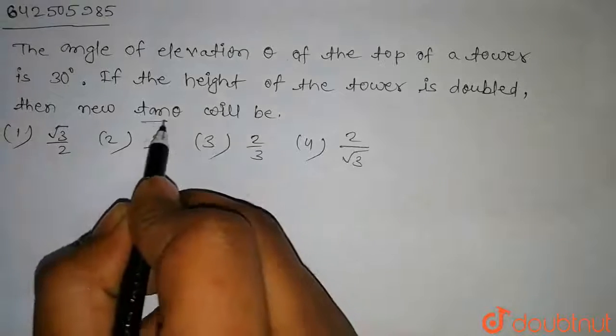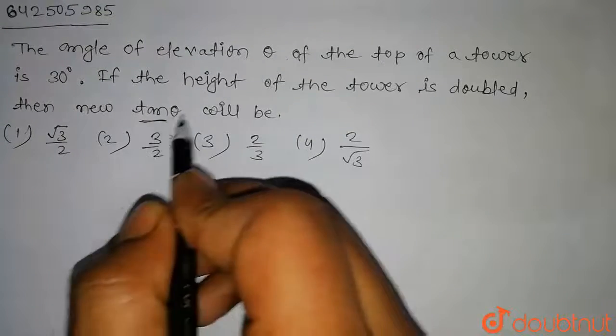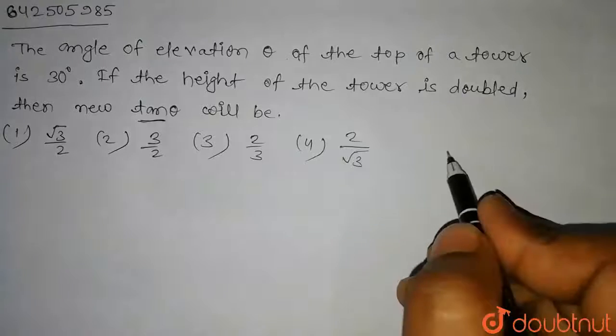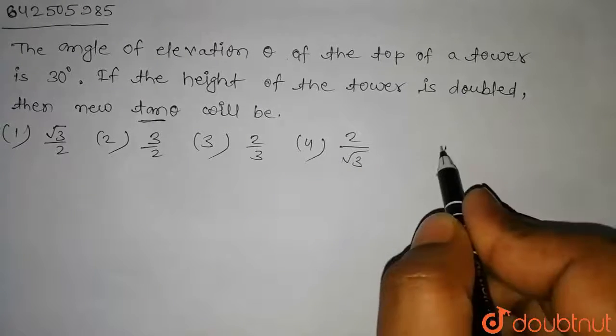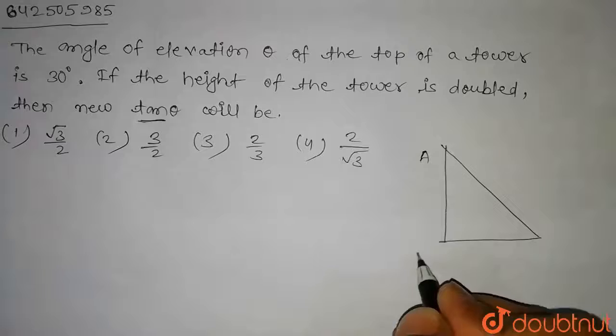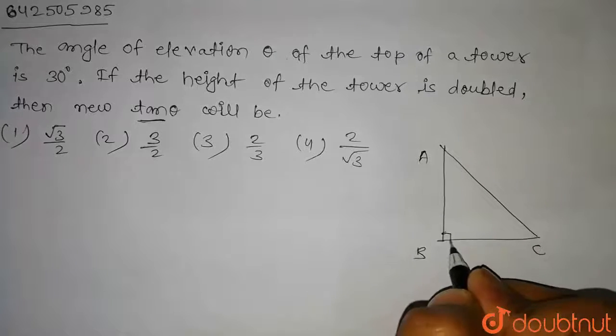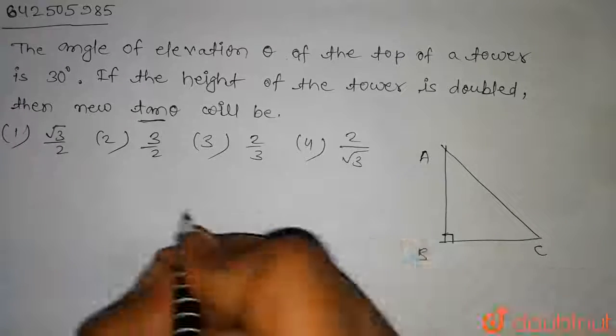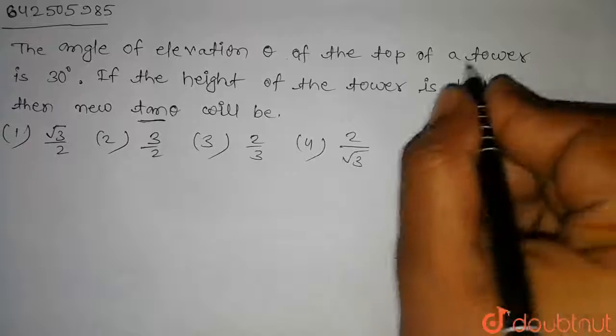In this question, we have to find the tan theta when the height of the tower is doubled. So let's consider a triangle ABC, right angle at angle B. Then we have AB equal to the height of the tower.